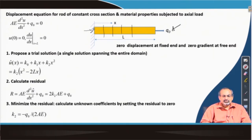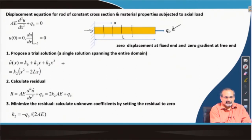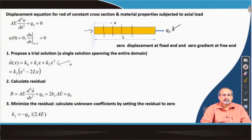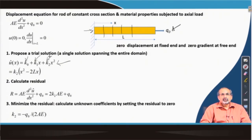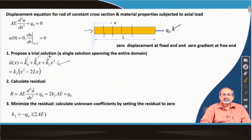Now, we propose a trial solution in the form of a polynomial, and remember that it is a single solution that we are proposing which spans the entire domain. This trial solution should be valid for the entire domain spanning from x equal to 0 to x equal to L. You can see these unknown coefficients k₀, k₁, k₂, and so on, and you need to calculate those unknown coefficients based on the boundary conditions provided and also based on minimization of the residual.